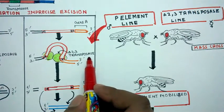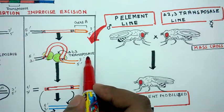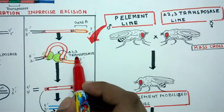But as this delta 2,3 transposase is defective, this cleavage may not be precise. It's very important to understand, this cleavage may not be precise.